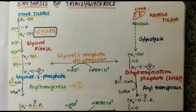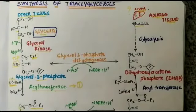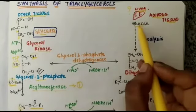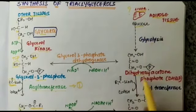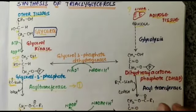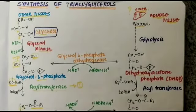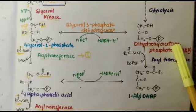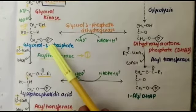However, glycerol kinase is absent in the liver. The question is how triacylglycerol synthesis takes place in the liver and adipose tissue. There is an alternative: glucose is converted into dihydroxyacetone phosphate (DHAP) by glycolysis. This DHAP is an intermediate that acts as an entry point into the glycerol pathway for the formation of triacylglycerols.